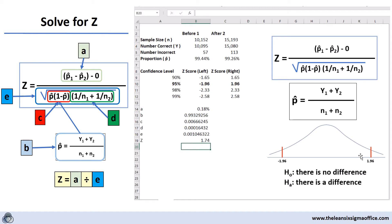As you can see, 1.74 is falling right about here on the bell curve. So it does not cross the 1.96. So we're going to say with 95 percent confidence there is no difference between these proportions. So after we made the change, even though the percent accurate has gone down and the number of incorrect has gone up, there is no difference in before and after.